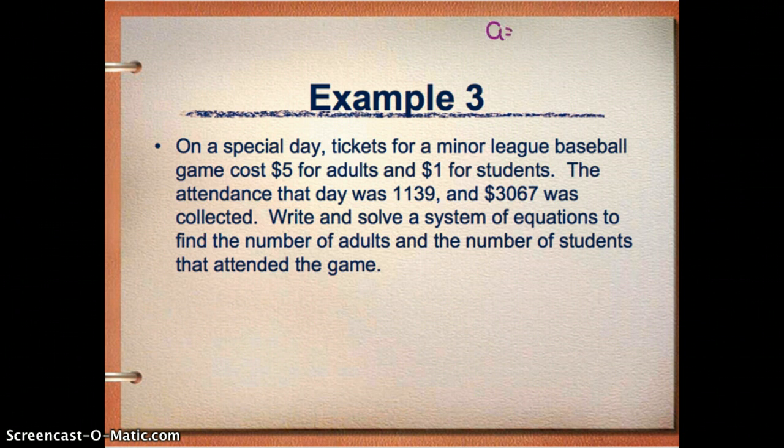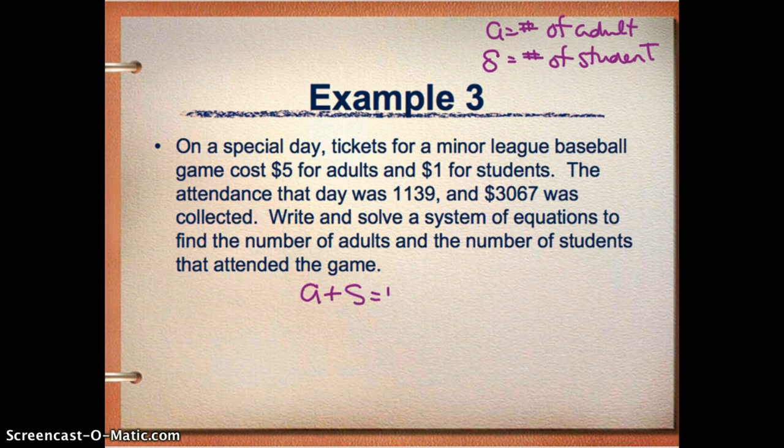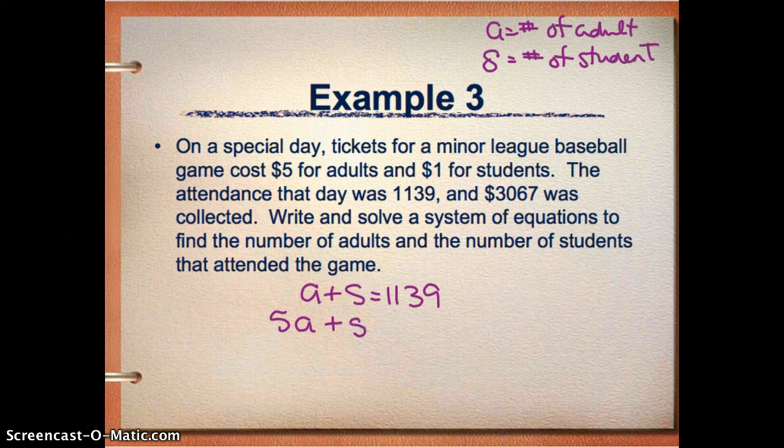I would like you to try this on your own because I think that would be pretty important. I'm going to say A is the number of adult tickets, and S will be the number of student tickets. So I know that altogether, since the attendance was 1,139, that A plus S equals 1,139. I know I got $3,067, so I got $5 for every adult and $1 for every student. So five times my adults plus one times my students equals $3,067.